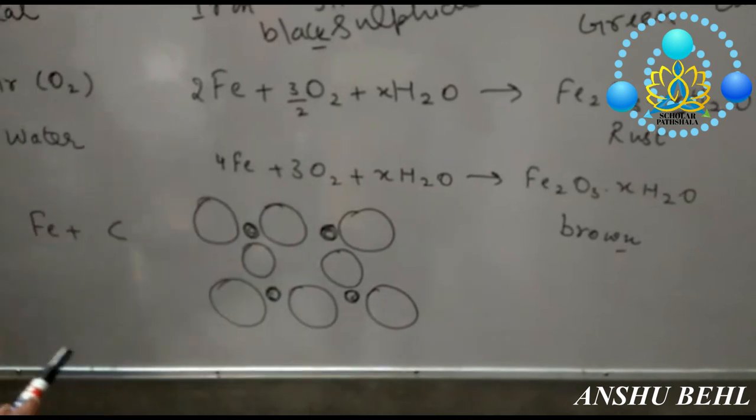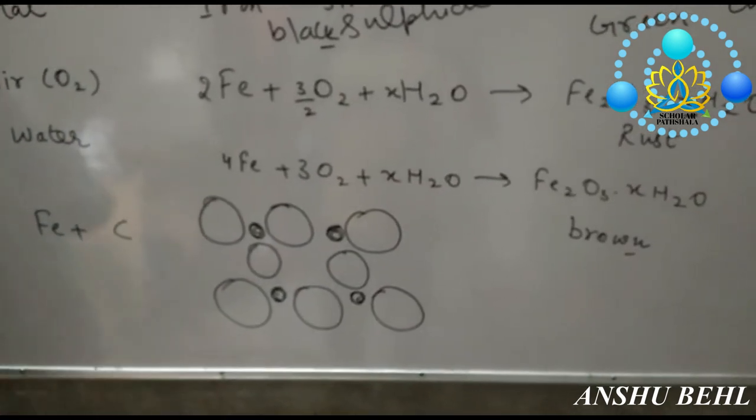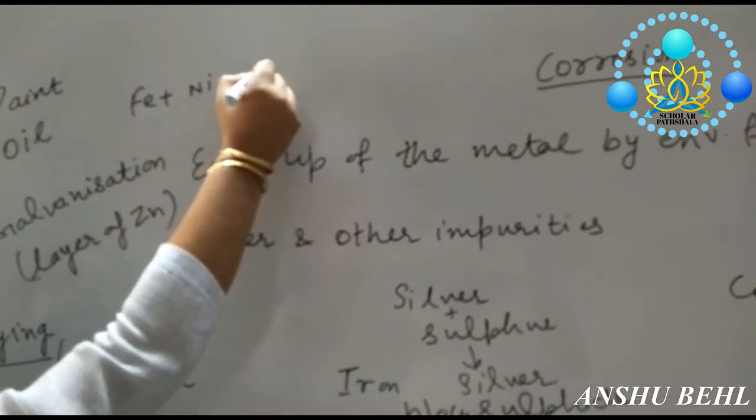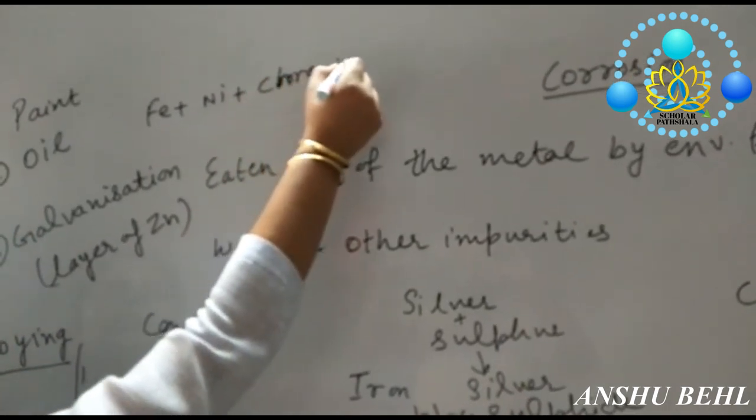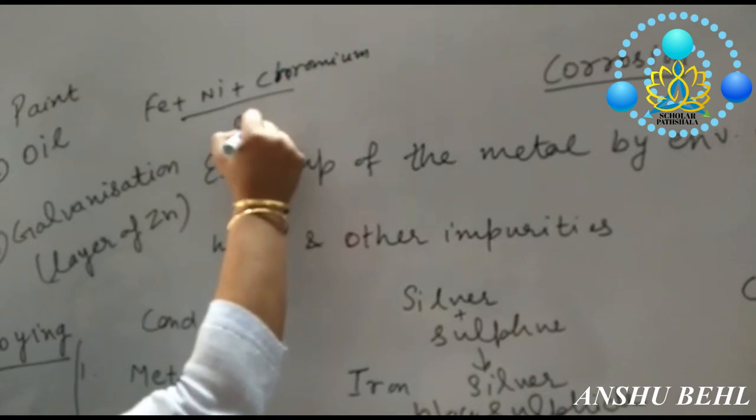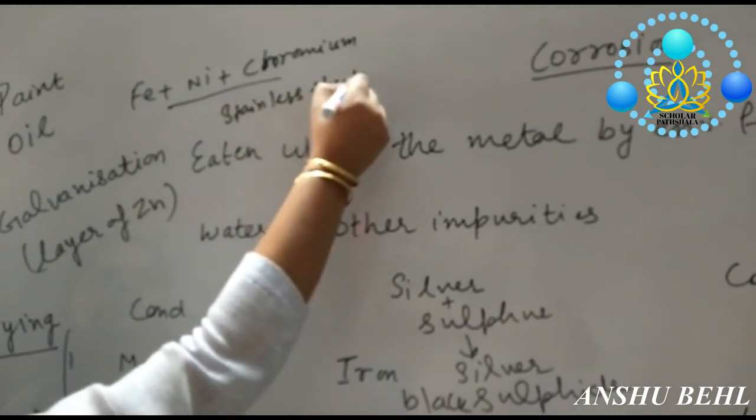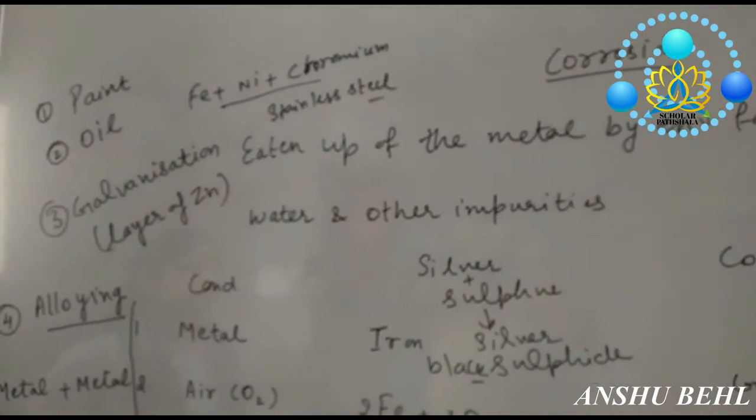So, steel don't get corroded. In the same way, we can mix iron with nickel and chromium to make stainless steel. In this way, alloys can be made and corrosion can be prevented.